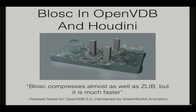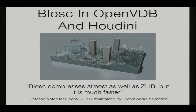BLOSC is a library made in C, and it is widely used — it has been used, for example, in OpenVDB and Houdini, which is a library for producing 3D animation movies maintained by DreamWorks. The main place to use BLOSC is to accelerate input/output, not only on mechanical disks, but especially on solid-state disks and main memory.